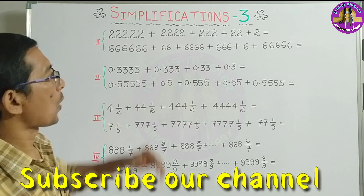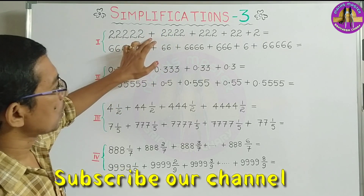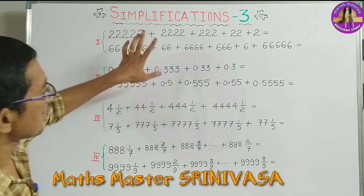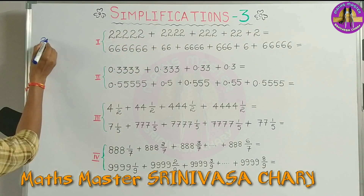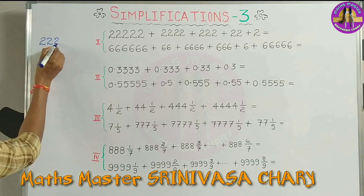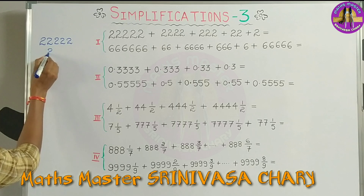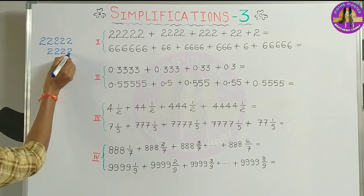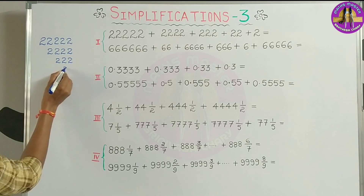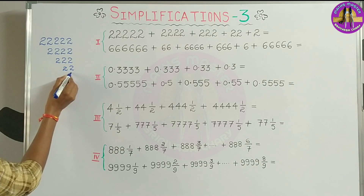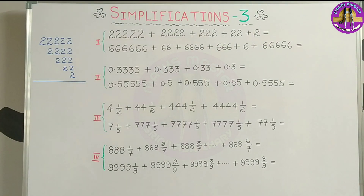We will explain how we can do the process. For example, we will ask a commentator example and some questions. For example, 22,222 and 222,222. Addition will be done in general.